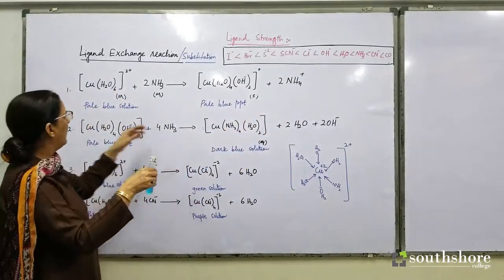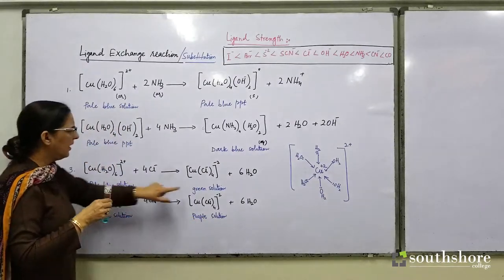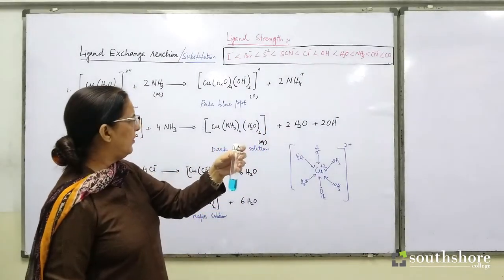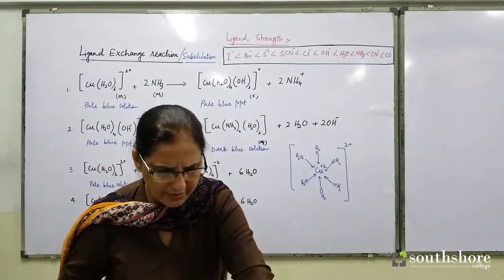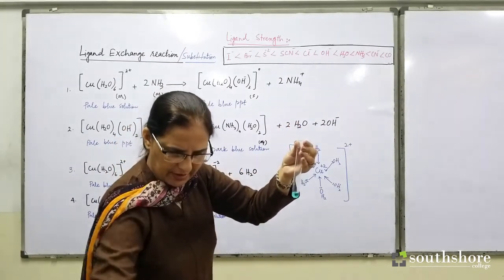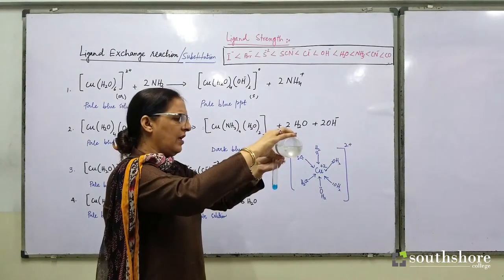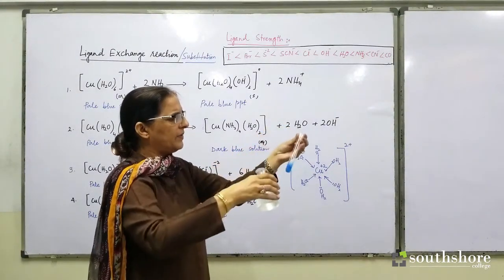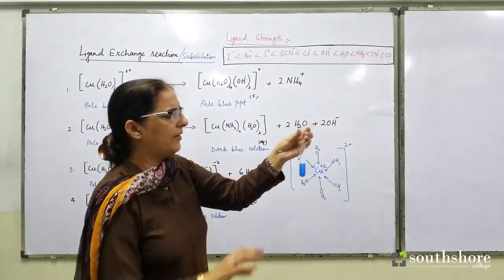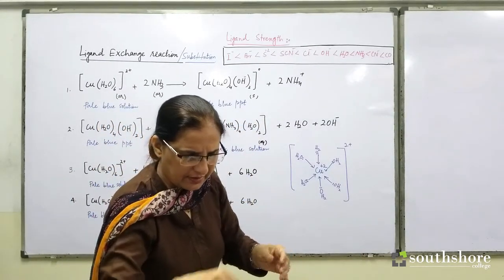Whenever it is a complex ion, it is going to be a solution. So when you look at your hexa-aqua copper(II), it is going to be your pale blue solution. Now if I do a reaction you have done in your AS earlier in practical work — I have taken one centimeter depth and I am adding hydroxide ions to it. Hydroxide ions are one of your ligands, and what happens is it gives you a precipitate. Here I have used only hydroxide ions from sodium hydroxide.